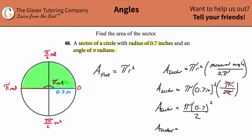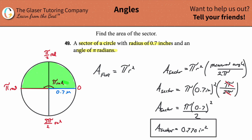This works out to be about 0.77 square inches. That's the area of that shaded sector — not bad.